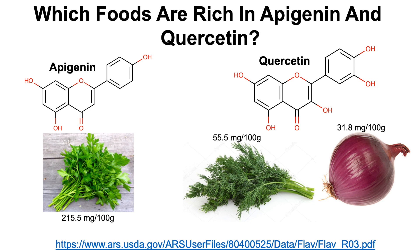I always favor whole foods over supplements. With this in mind, it may be a good idea to include foods such as parsley, dill, and purple onions. If you want to look at other, less concentrated sources of apigenin and quercetin, I've included a link.